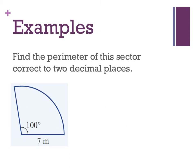So it says find the perimeter of this sector correct to two decimal places. Why is this question more difficult? Well, we don't have a whole circle. We have a part of a circle. So this is a sector. This is what my sectors are actually looking at.